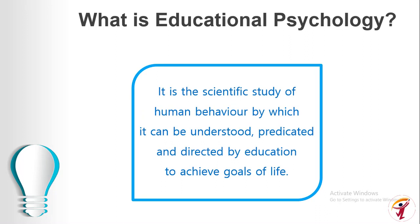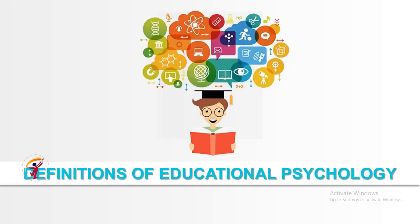Educational psychology is the scientific study of human behavior by which it can be understood, predicted, and directed by education to achieve the goals of life. So educational psychology is a scientific study of learners' behavior by which behavior can be understood, predicted, and directed through education — to achieve the goals of life. Education takes the help of psychology to understand the learner's mind.